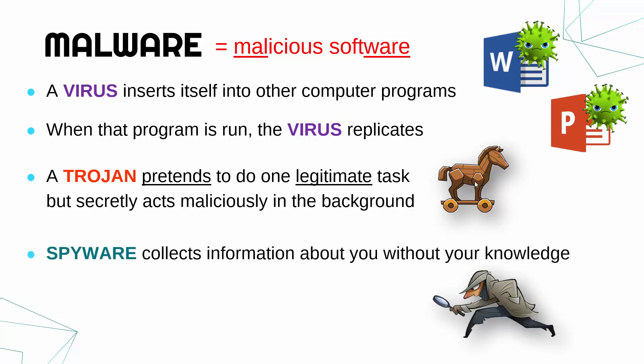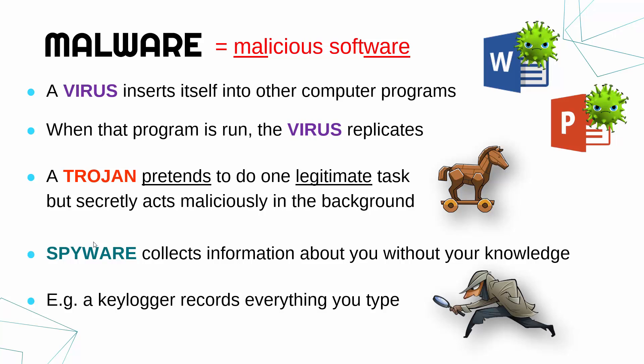The final type of malware is spyware, which — as the word spy suggests — collects information about you without your knowledge. It could be part of a virus, part of a Trojan, or its own bit of software. One example of spyware is a keylogger, which records everything you're typing, looking for passwords, usernames, and bank details. The spyware then sends those details through the internet to the attacker.